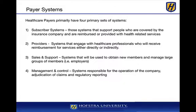A healthcare payer basically has four primary sets of systems. They'll have systems that deal with subscribers — the people covered by the insurance company who are reimbursed or provided with health-related services. They'll also have systems for providers, systems for sales and support to manage brokers and groups for employee eligibility, and management and control systems responsible for basic operations including reports, adjudication of claims, regulatory items, and financial reporting.